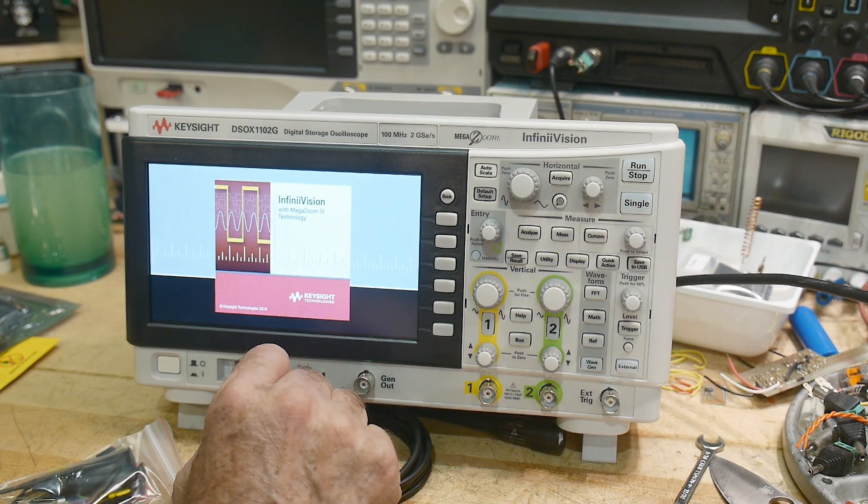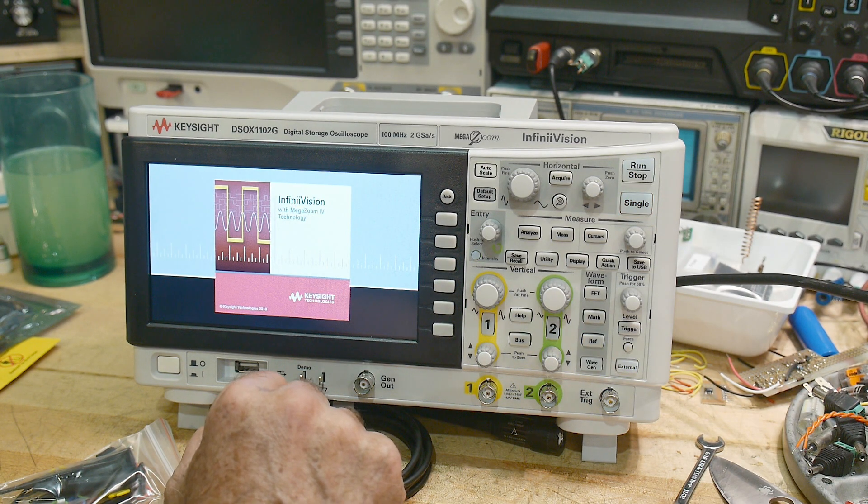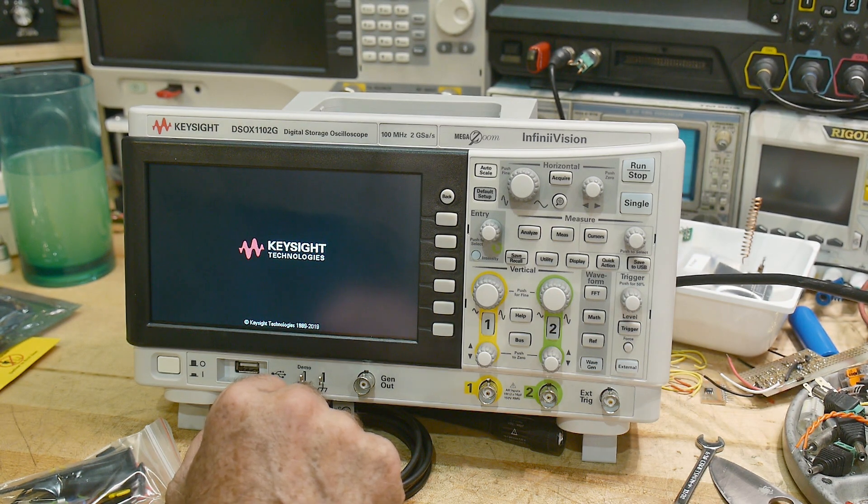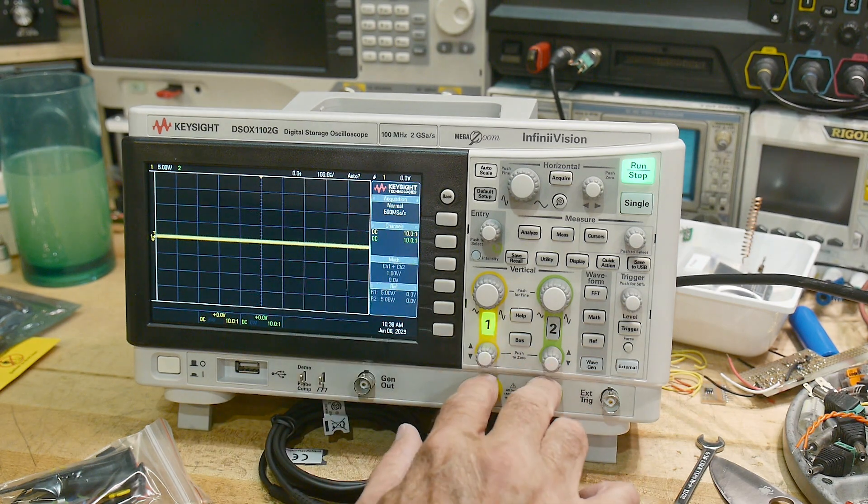There we go. Get a flash screen here. The lights are blinking on and off. All right. And we're up and running. So this is a two-channel scope.